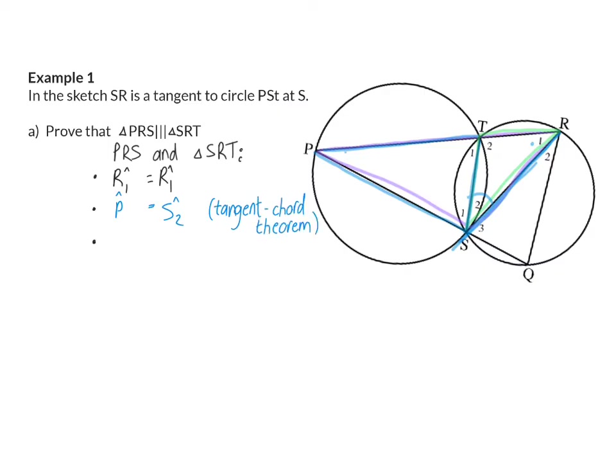And once you have two pairs of common angles that you have proven are the same, the third pair of angles you can accept are the same, because in both triangles, the interior angles still have to add up to 180 degrees. So in my blue triangle, I'm left with angle S1 and S2, and that will then be the same as angle T2 in my green triangle. My reason for that, interior angles of a triangle.